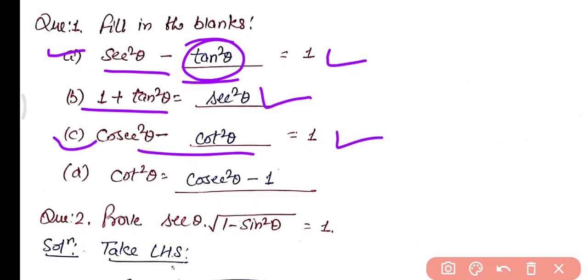Keep in mind: sin² θ plus cos² θ equals 1; 1 plus tan² θ equals sec² θ; 1 plus cot² θ equals cosec² θ; tan θ equals sin θ over cos θ; cot θ equals cos θ over sin θ; sin θ equals 1 over cosec θ; cos θ equals 1 over sec θ; and tan θ equals 1 over cot θ.